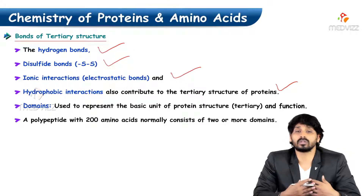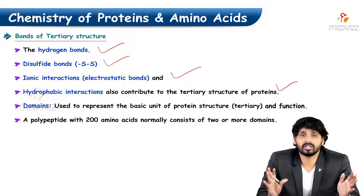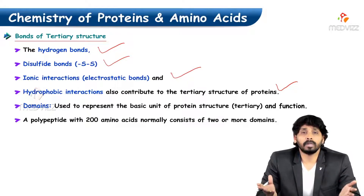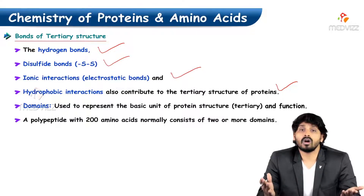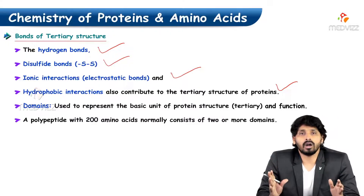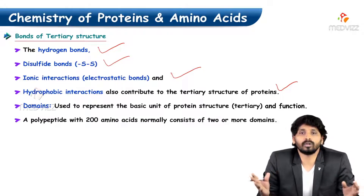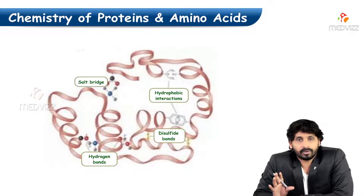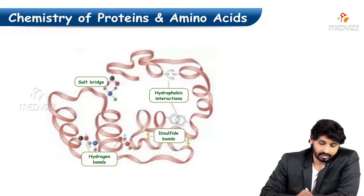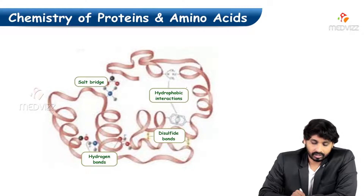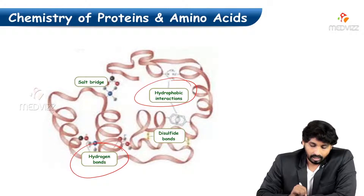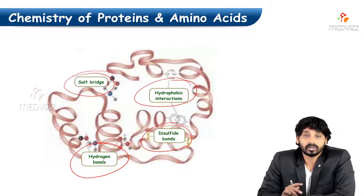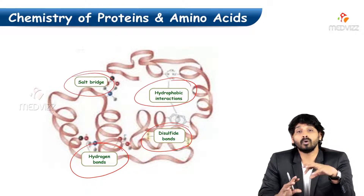What domains will be used? The domains are specific in the representation of a particular protein structure. The polypeptide in tertiary structure may contain 200 amino acids, and all these 200 amino acids are arranged in 2 or 3 domains. Looking at the classical example of tertiary structure, we can see salt bridges — that means ionic bridges — hydrophobic interactions, hydrogen bonding, and disulfide bonding. All these bonds are responsible for tertiary structure, making the particular protein more stable.